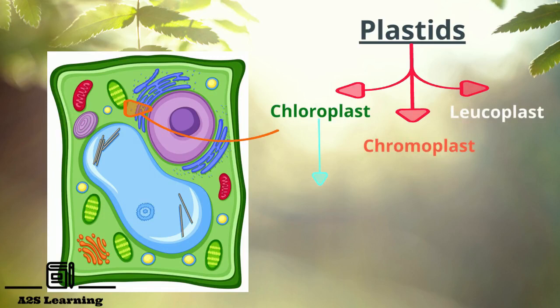Chloroplast: They are green in color and contain a green pigment called chlorophyll. The chlorophyll present in chloroplast traps solar energy and helps in photosynthesis.